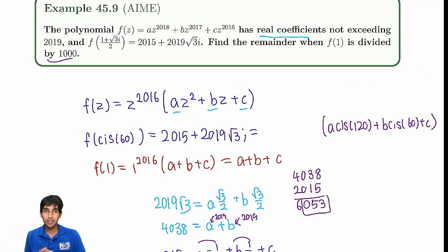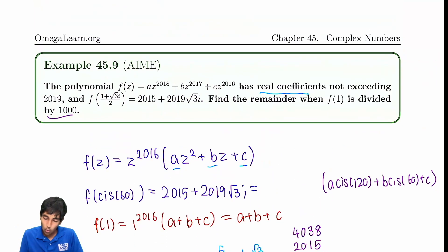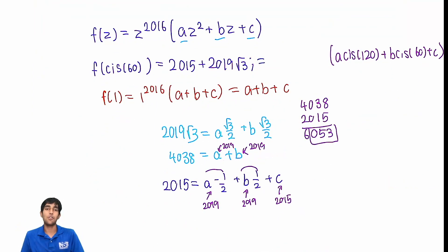And then our sum is just 4038 plus 2015, which gives us an answer of 6053, but our answer is just the last three digits, because the remainder when divided by 1,000, so 53. Pretty neat problem. The idea: factor out z to the 2016, first of all. That should be the first thing. And then you see that this is just cis of 60. Careful observation. And then after that, real part, imaginary part, write two equations. And then you realize, oh, we haven't used this condition. How do we use that? Ah, a plus b is 4038. So they both have to be 2019.